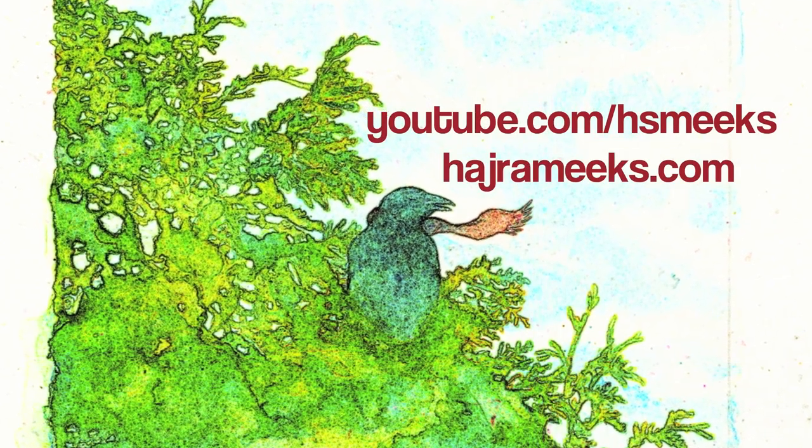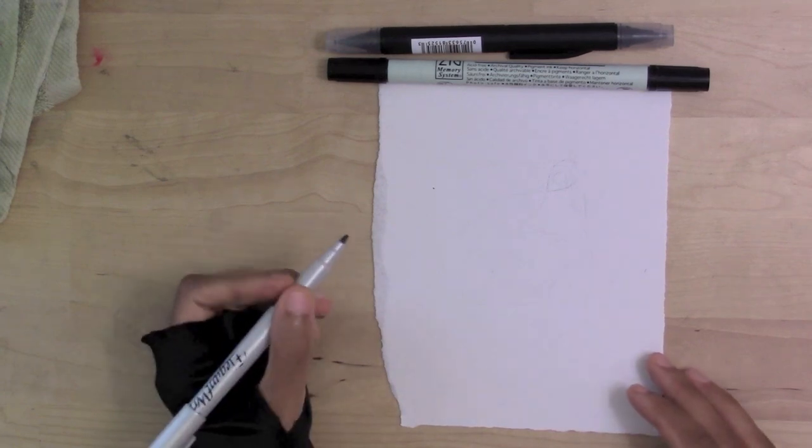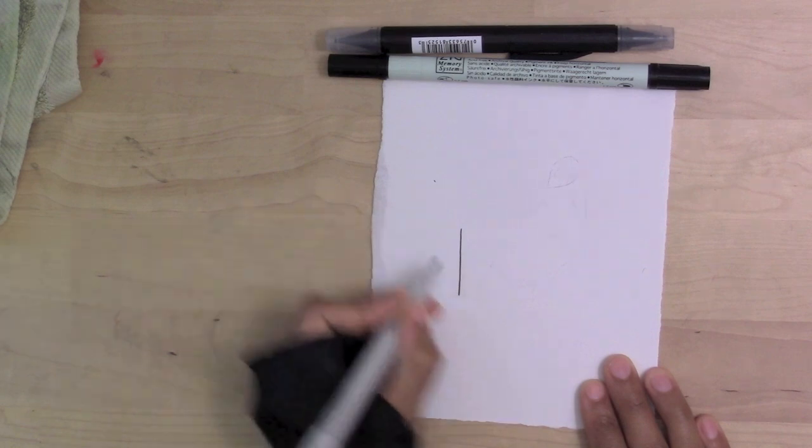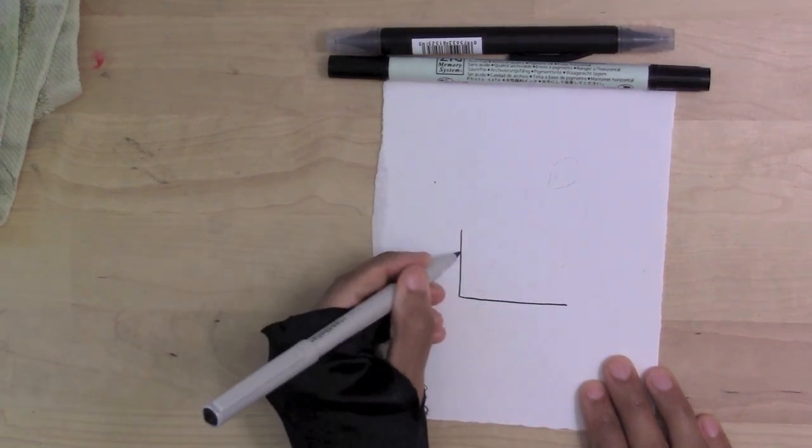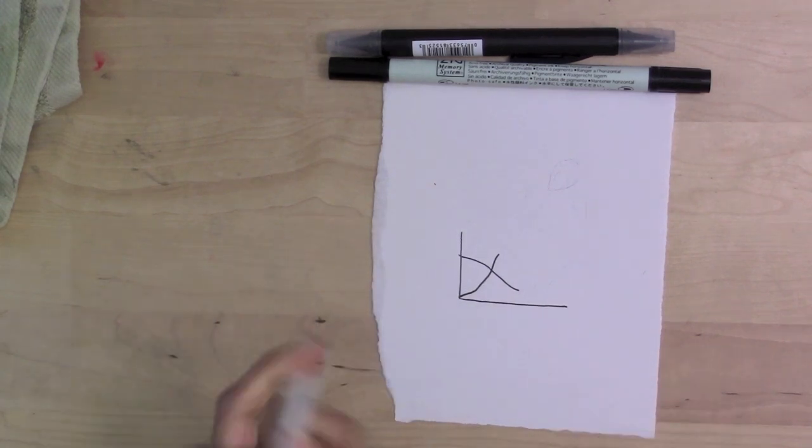An Art Nouveau Tiffany Stained Glass Watercolor Project by Hajra Meeks. Here's a little piece of scrap paper, and before I get going on the final watercolor piece, I'm just going to draw a little outline demo on this piece of paper.